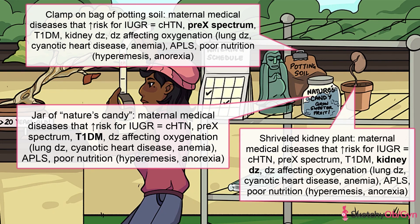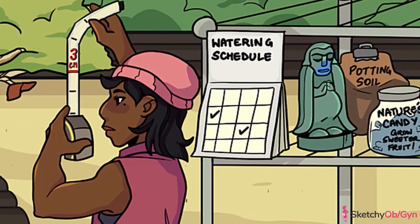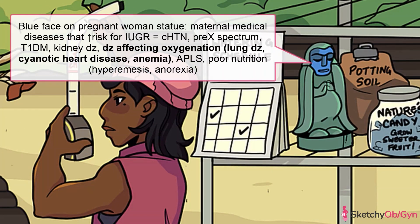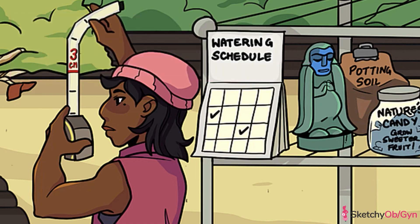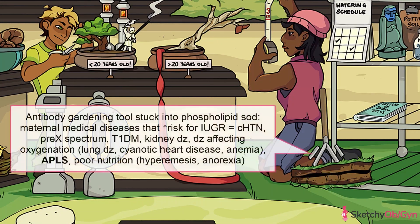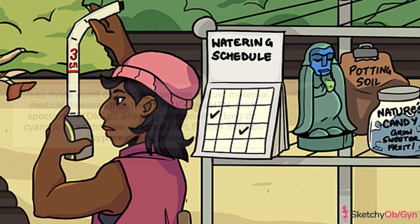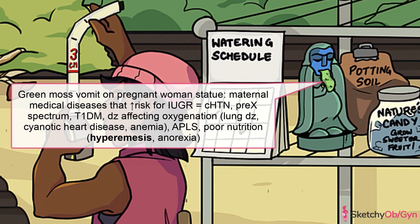Any maternal disease that affects vascular integrity will compromise blood flow to the fetus and is a major risk factor for IUGR. These diseases include hypertension, preeclampsia, symbolized by this clamp on the potting soil, type 1 diabetes, symbolized by this jar of nature's candy, and renal disease. Antiphospholipid syndrome, symbolized by an antibody-shaped gardening tool stuck in a bilayer of sod, is another well-known risk factor for fetal growth restriction.